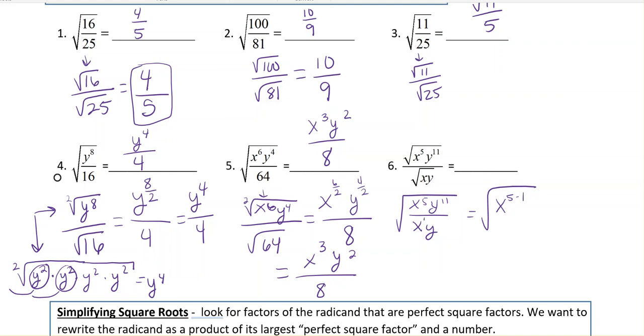because it says the power of 1, times y to the 11 minus 1, which would give me the radical x to the 4th and y to the 10th.